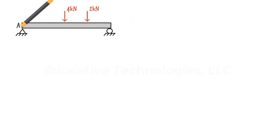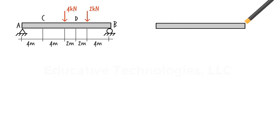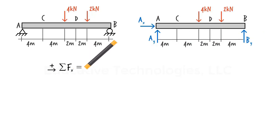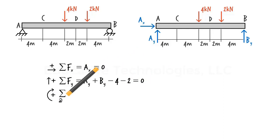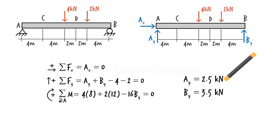Let's illustrate this process using an example. Suppose we have a simply supported beam subjected to two concentrated loads. We wish to determine shear and moment at points C and E. Starting with the support reactions, here is the beam's free body diagram and the equilibrium equations. From the last equation, By equals 3.5 kilonewtons. From the second equation, Ay equals 2.5 kilonewtons. And the first equation gives us Ax equals zero.